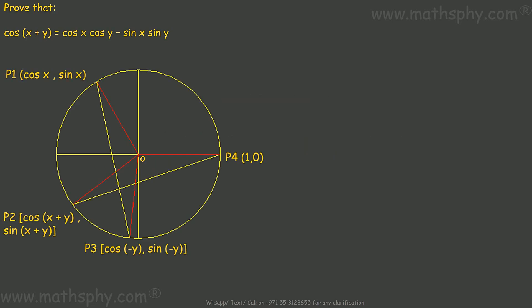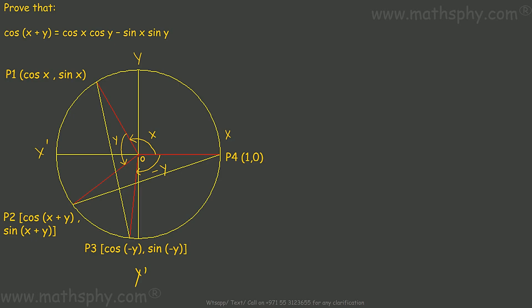We have taken a unit circle. This is the x-axis and this is the y-axis. Let's take this angle as x, this angle as y, and this angle exactly equal to negative y — since we are going clockwise. So we have three angles here: angle x, y, and negative y.